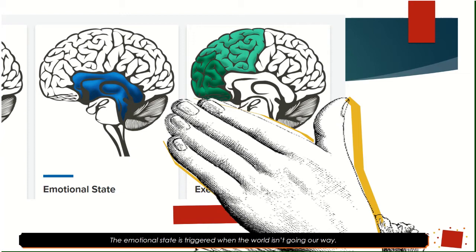Our next brain state is the emotional state, triggered when the world isn't going our way. This is the most common state you will find the children in your care, and it is the most common state you're going to find yourself in when things are going bananas in your group. As adults, we've learned over the years that lots of things can't go our way and we can roll with it — we've got tools. But many kids have not yet been given the tools to help themselves when the world isn't going their way.